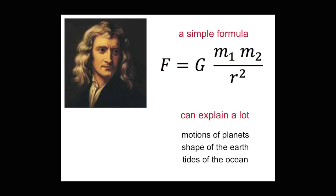Solving those equations, we can sometimes find the unanticipated consequences of the assumptions that we've made. And in fact, sometimes very simple equations, like Newton's law of gravity, can have very far-reaching consequences. This very simple equation explains the motion of the planets across the sky, the shape of the earth — it's a little fatter around the equator — and tides in the ocean.